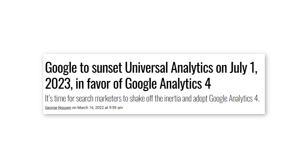So you probably heard the news. Yesterday, Google announced the date of when Universal Analytics, which is also known as the older version of GA, will stop working. On July 1, 2023, Universal Analytics will stop collecting data.